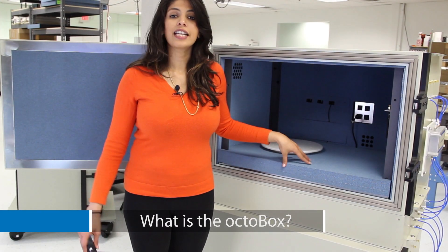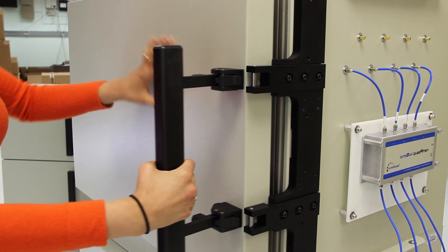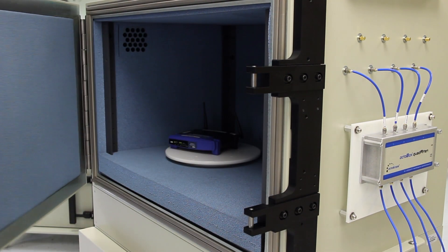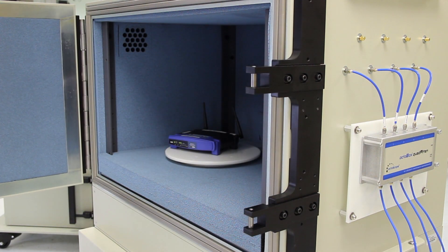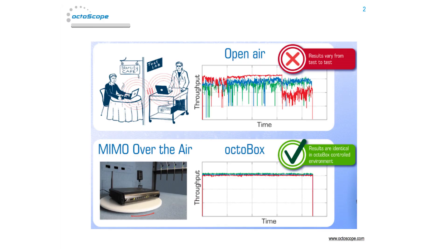The Octabox is a small stackable anechoic chamber used for testing wireless devices and systems. It isolates the device under test from external interferences and creates a stable environment to achieve repeatable throughput measurements.